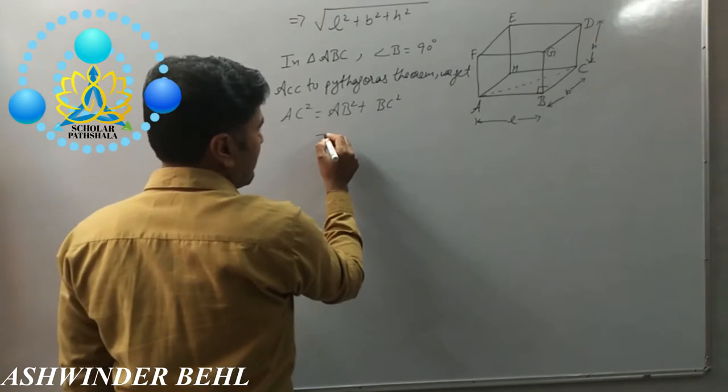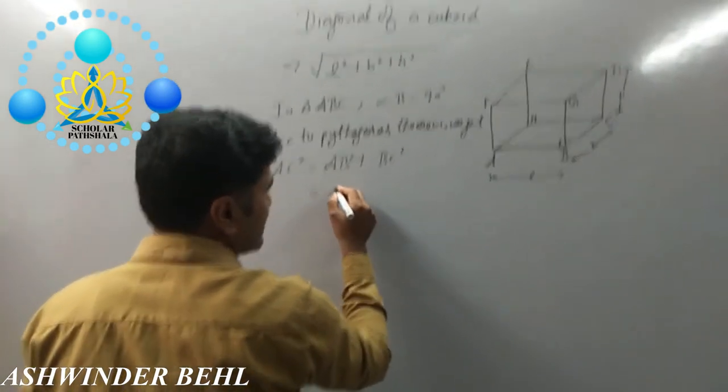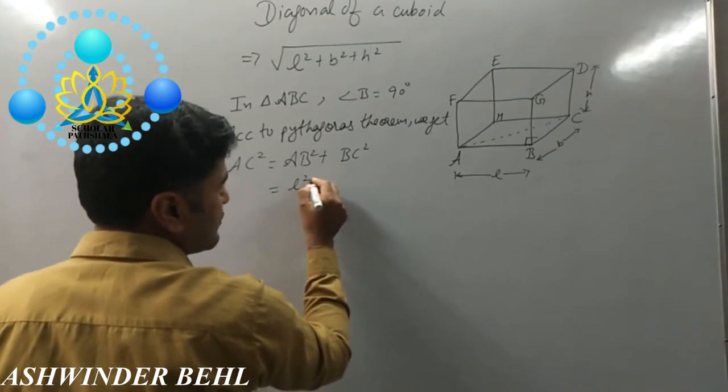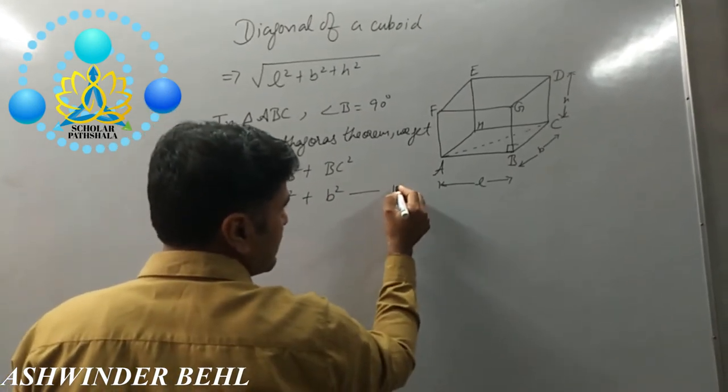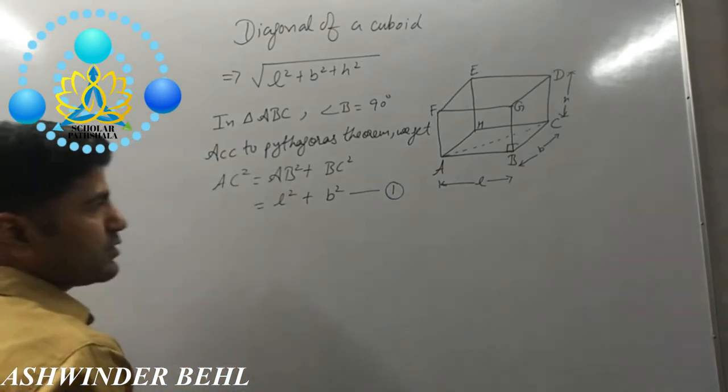Now we put the values: AB is L, so L²; BC is B, so B². Therefore, AC² = L² + B². This is the first equation.